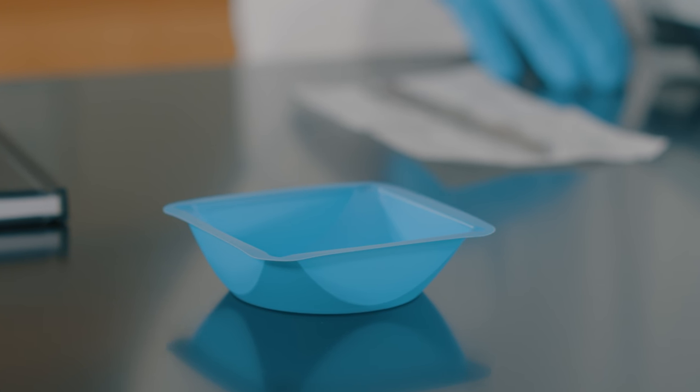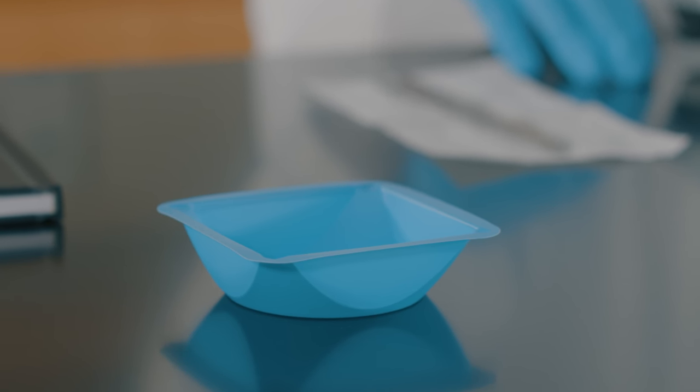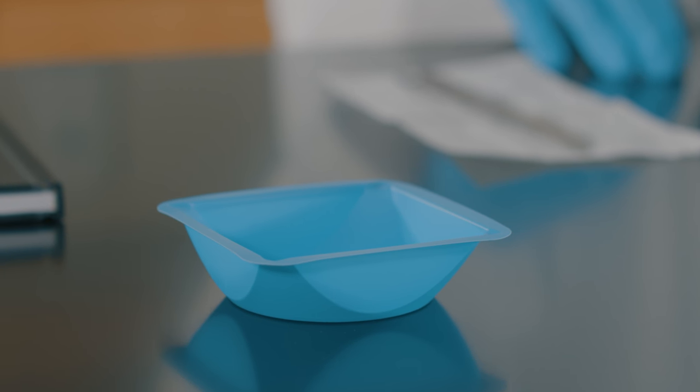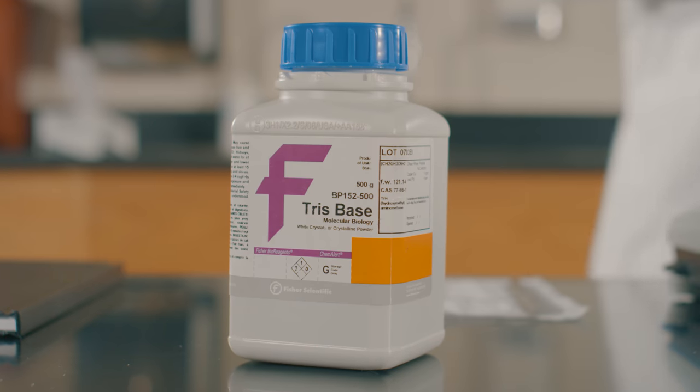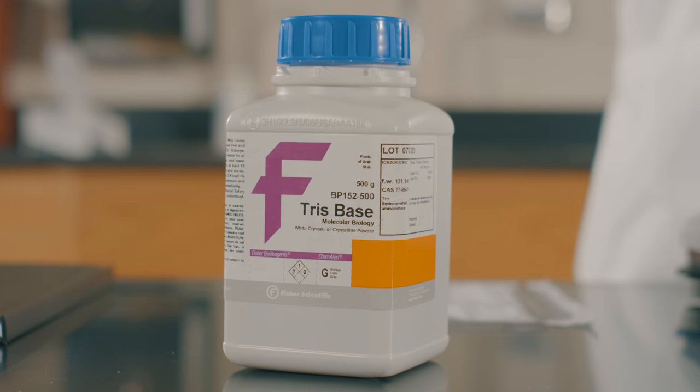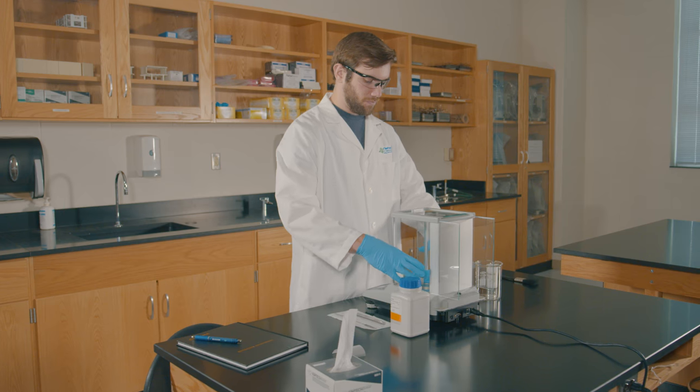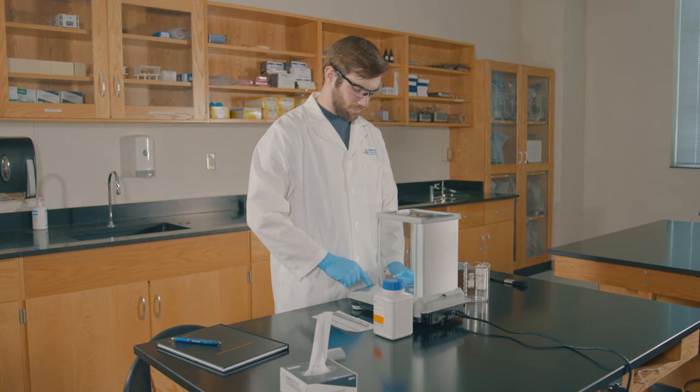Let's do another example. This time, we'll weigh something a little heavier, so we'll use a weighboat instead of paper. Let's measure out 12.19 grams of powdered tris buffer. Place the weighboat on the balance pan. Close the side doors and press the tare key.